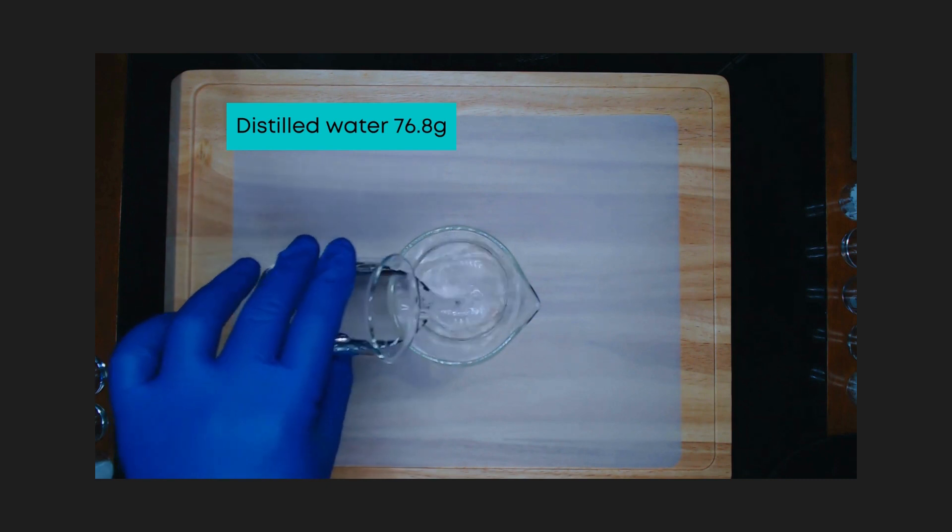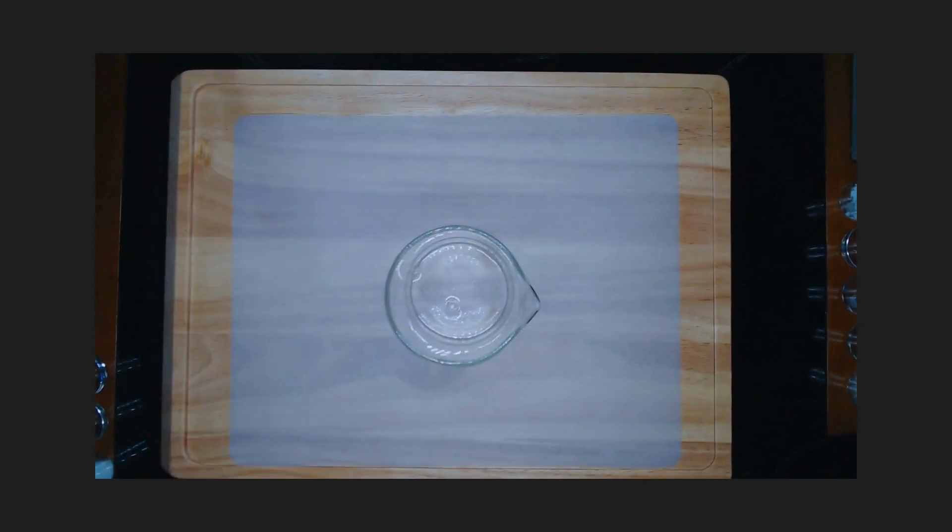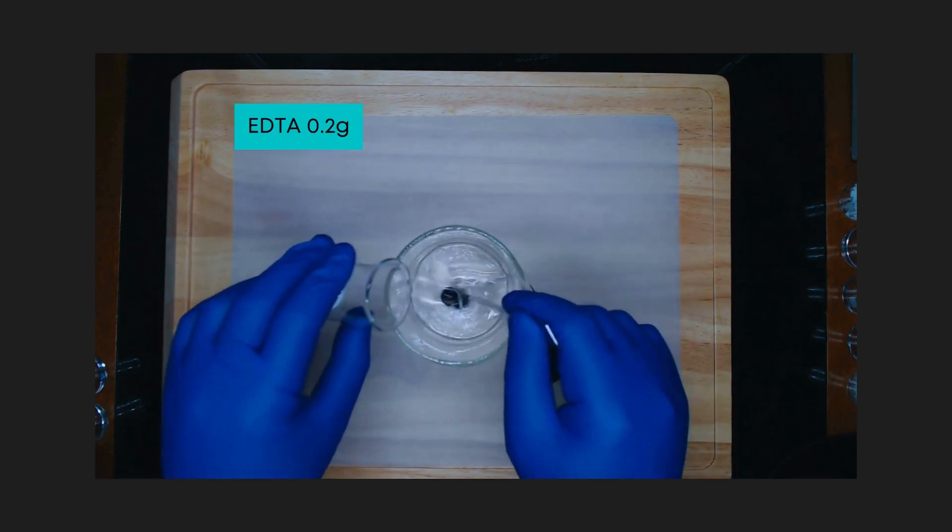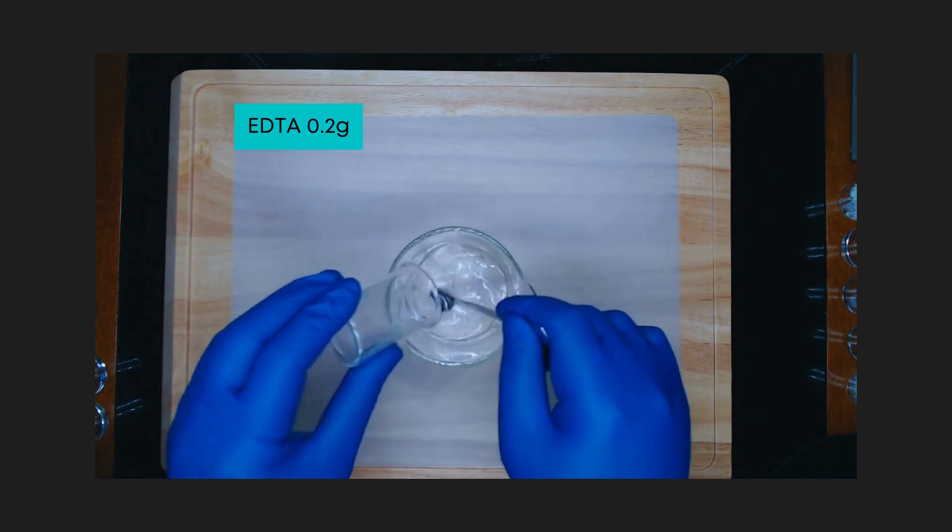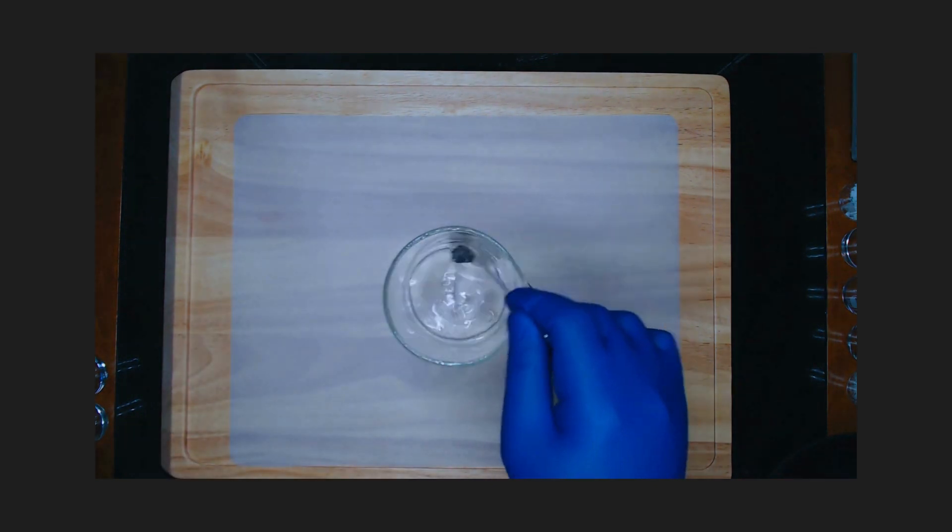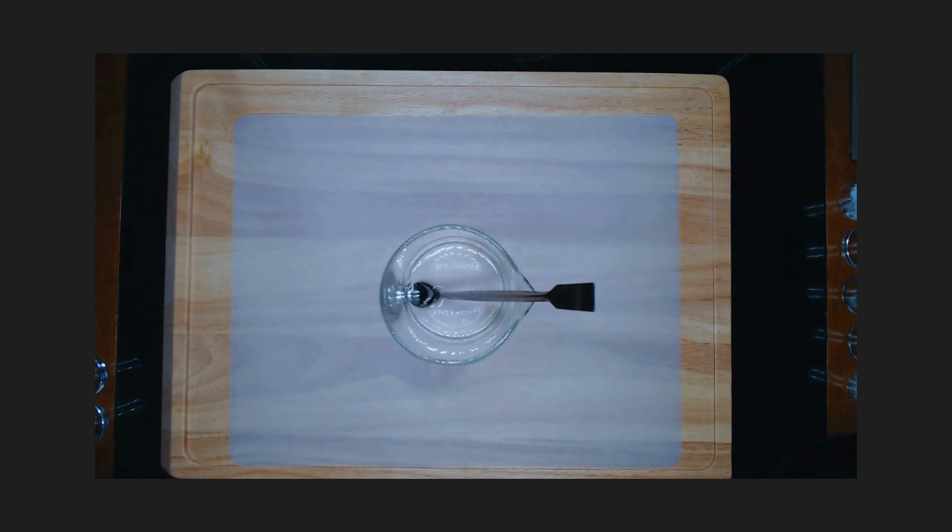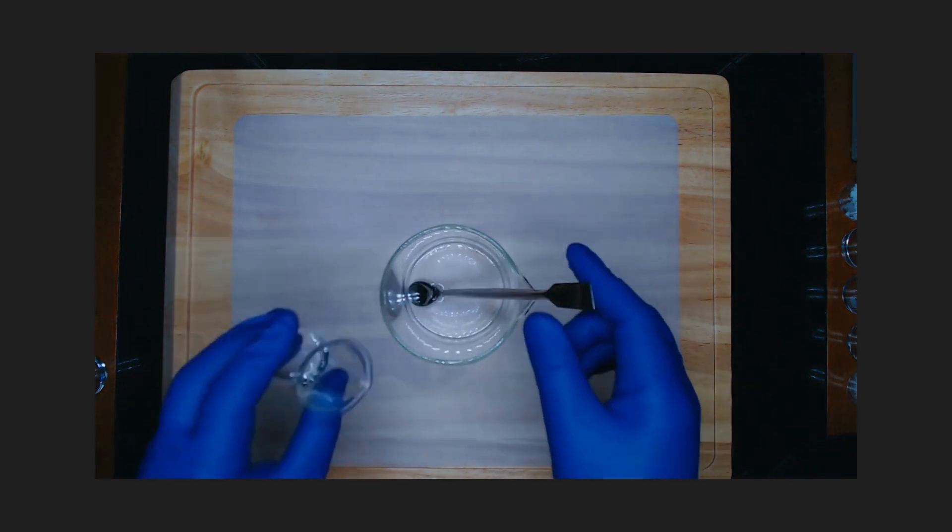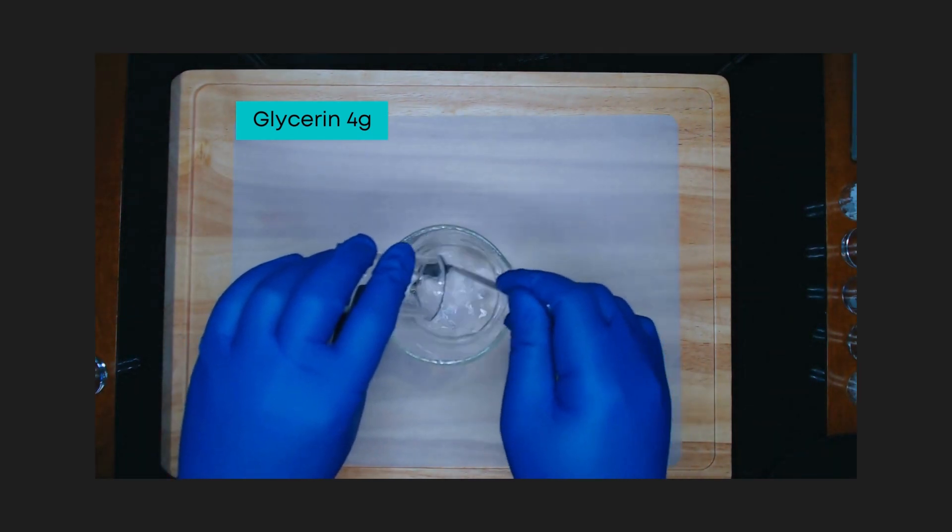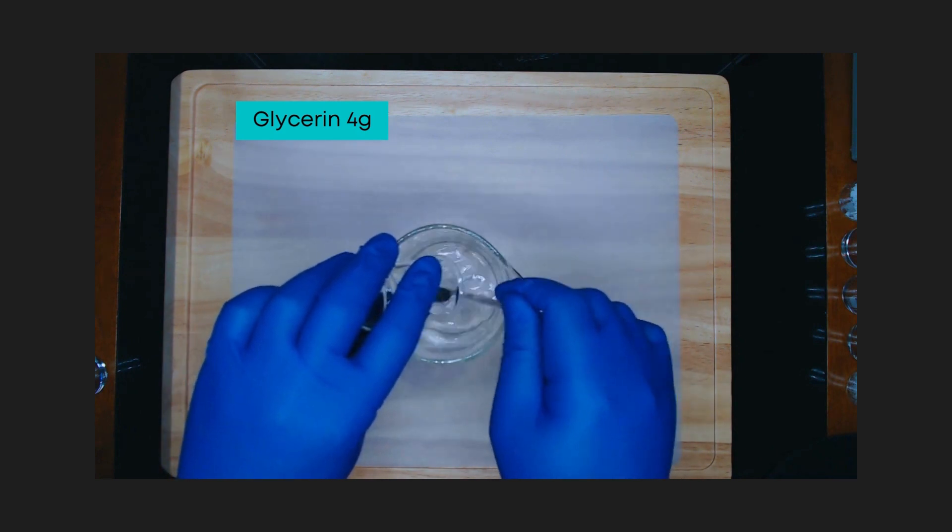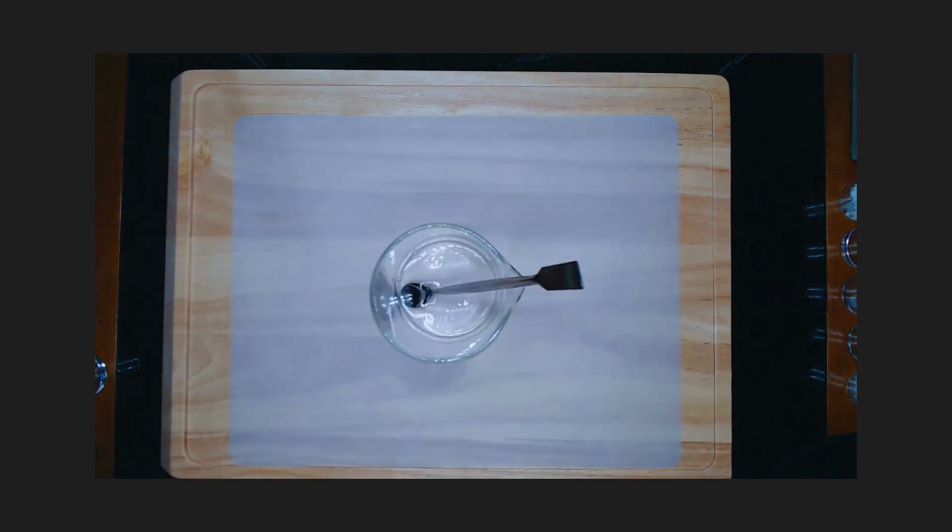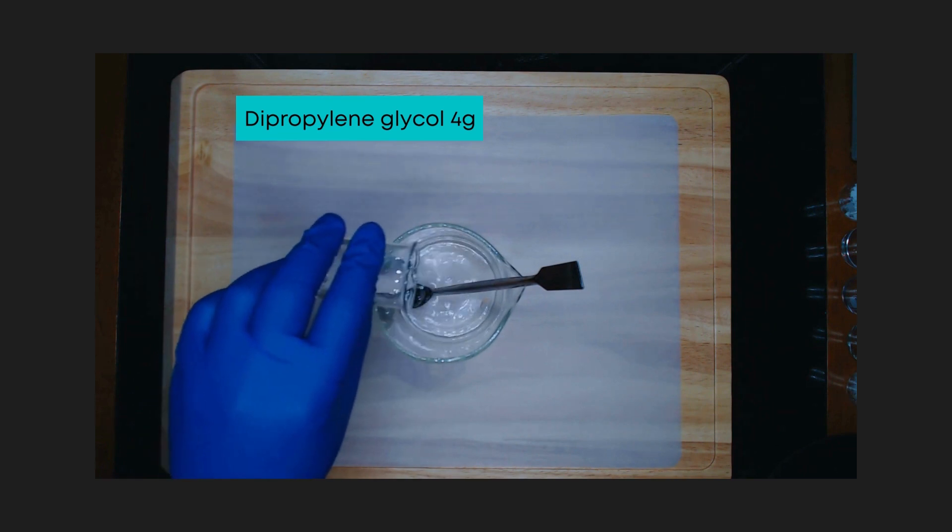In a beaker glass, add distilled water. Add EDTA as a stabilizer. Add glycerin as a humectant. Add dipropylene glycol as humectant and skin penetrator.